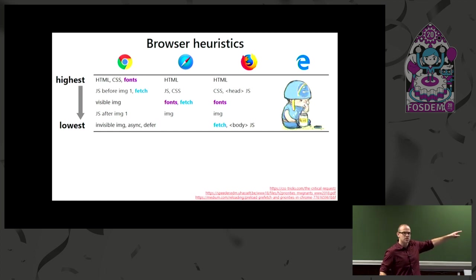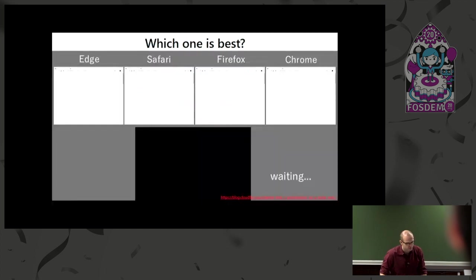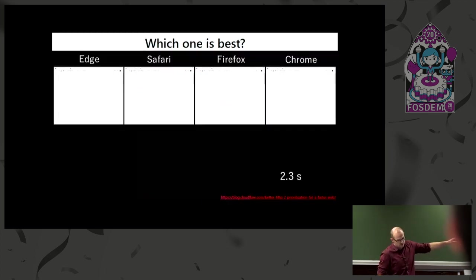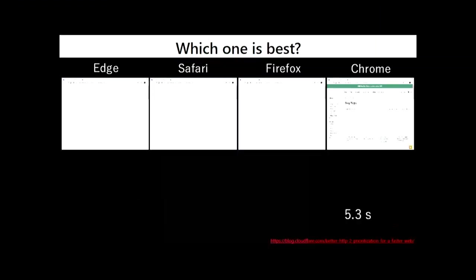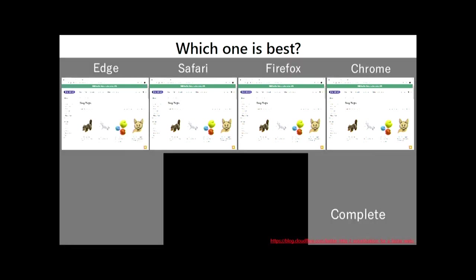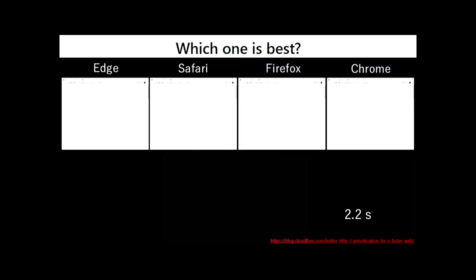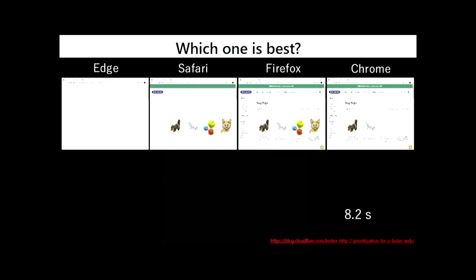Can you try to predict which of these heuristics is actually going to work best for web pages? Let's try and see by loading the same web page on different browsers and seeing which one comes in first. It's Chrome, then Firefox close afterwards, then Safari, and now we can wait ten more seconds for Edge to complete. I want you to focus on the differences, especially between Firefox and Chrome, and how they load fonts and images. It's going to be a very stark difference. It's quite different.